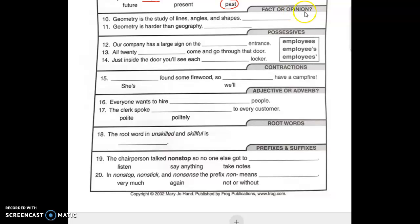Fact or opinion. A fact is something I can prove. An opinion is something that someone thinks or feels. Geometry is the study of lines, angles, and shapes. That is a fact. That is the actual definition of geometry. Geometry is harder than geography. That's an opinion. Because that's what someone thinks or feels.